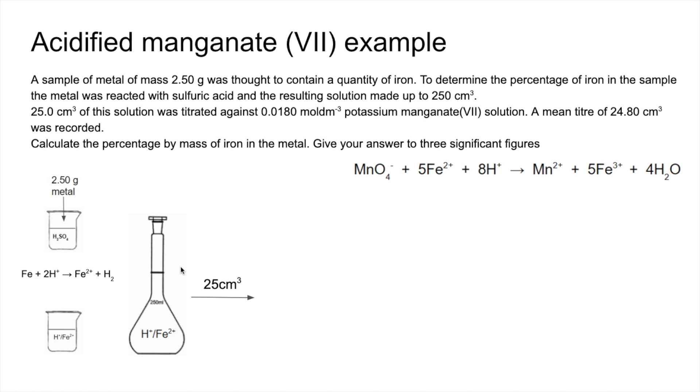And then 25 cm³ is taken out of this volumetric flask, put into your conical flask, and then the titration's carried out with that purple KMnO4. So if you're wanting to work out the percentage of iron in the metal, you're going to need to know the moles of iron in the metal, and then the mass of iron in the metal, and then compare it to that two and a half grams and express it as a percentage. So that's what we're heading for. It's always a good idea if you know what you're heading for.